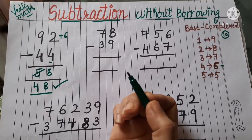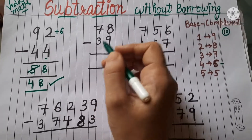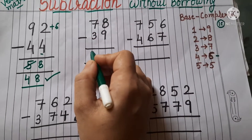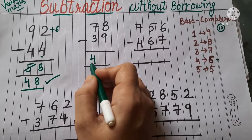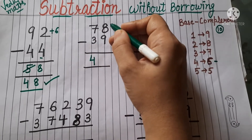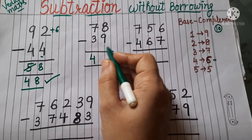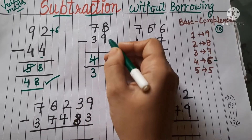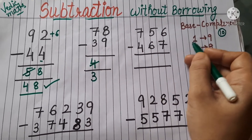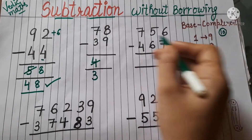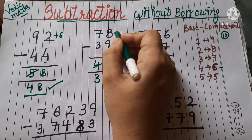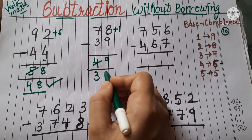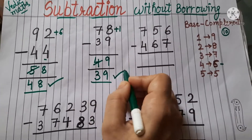Let's do one more example to make it clearer. We can subtract 3 from 7 very easily — that is 4. Now 9 we can't subtract from 8, so we will cut that number, write 1 less, and take the complement of 9. The complement of 9 is 1. We add the complement to the upper digit: 8 plus 1 is 9. So the answer is 39.